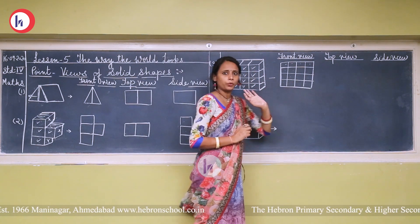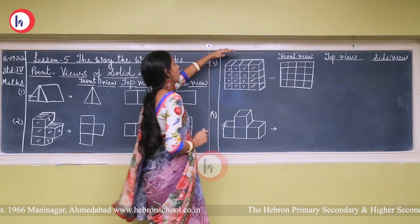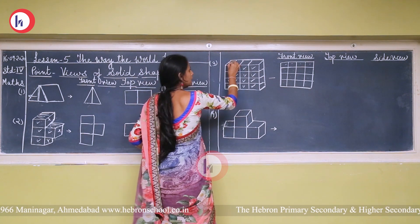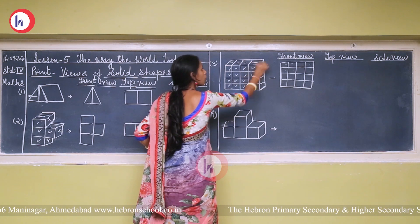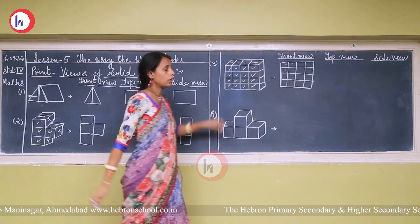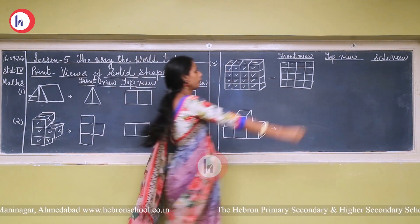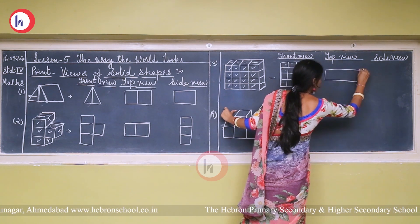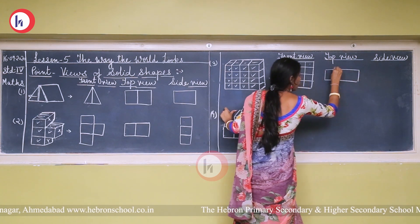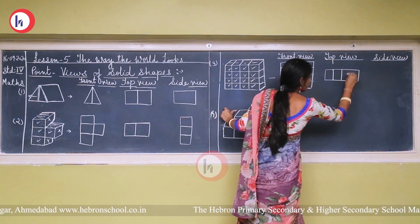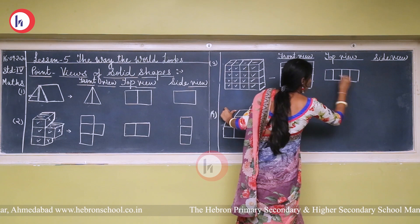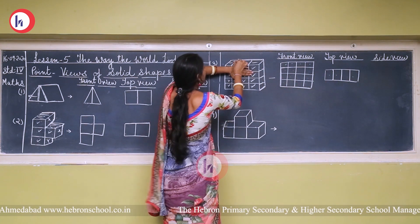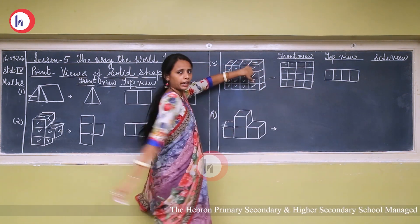Now the top view. When we see from the top side only, we can see 1, 2, 3, and 4 parts — 4 squares. So when we draw the top view, we draw only 4 squares: 1, 2, 3, 4.